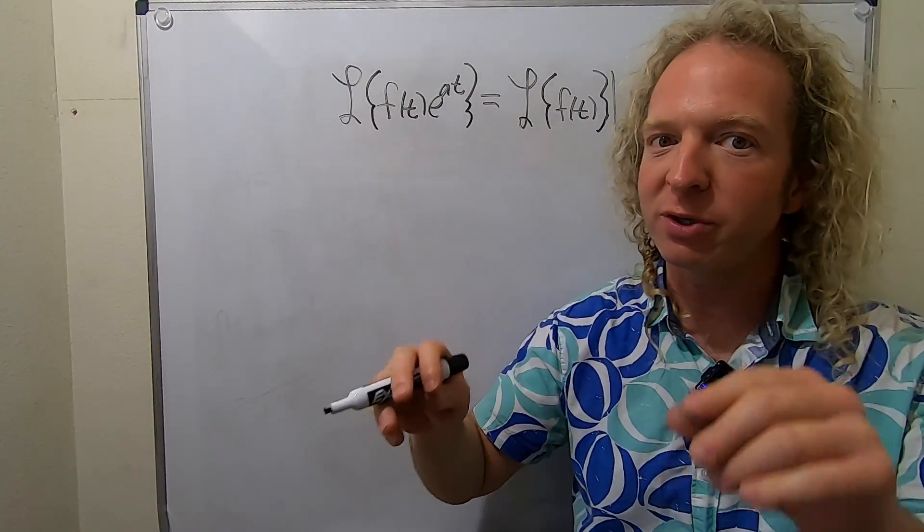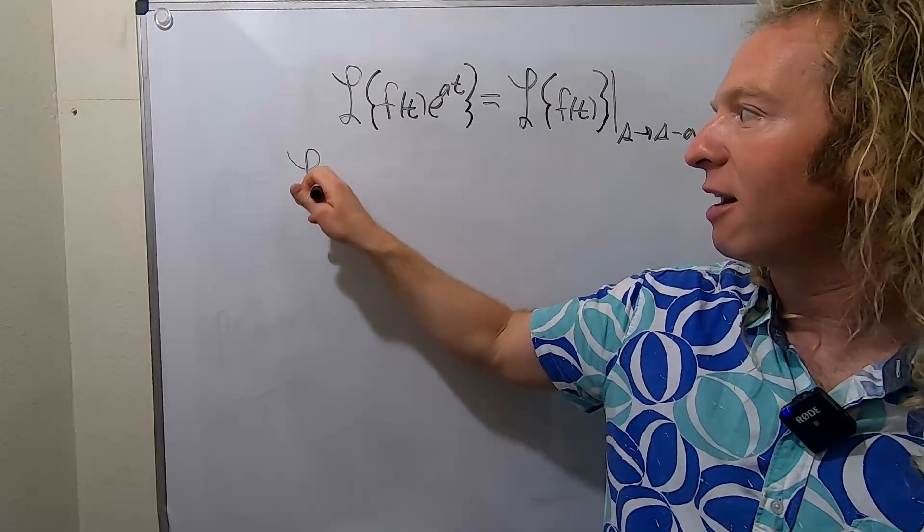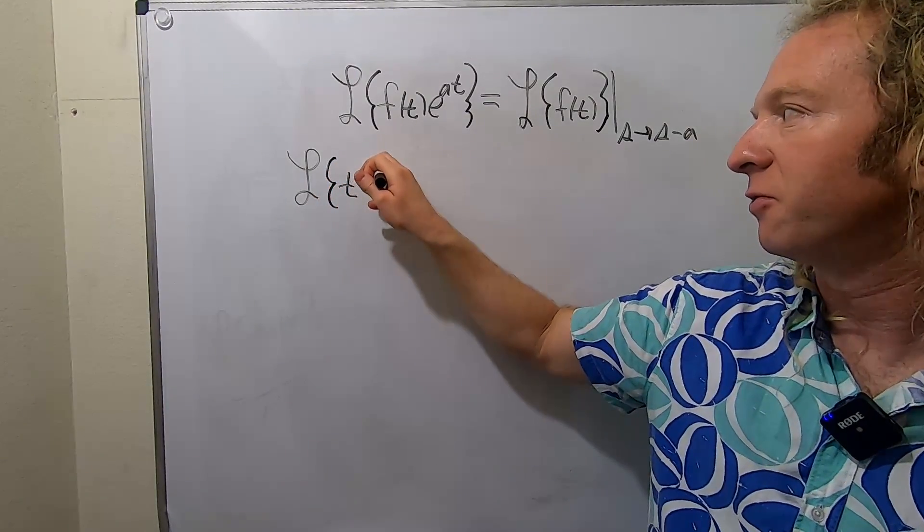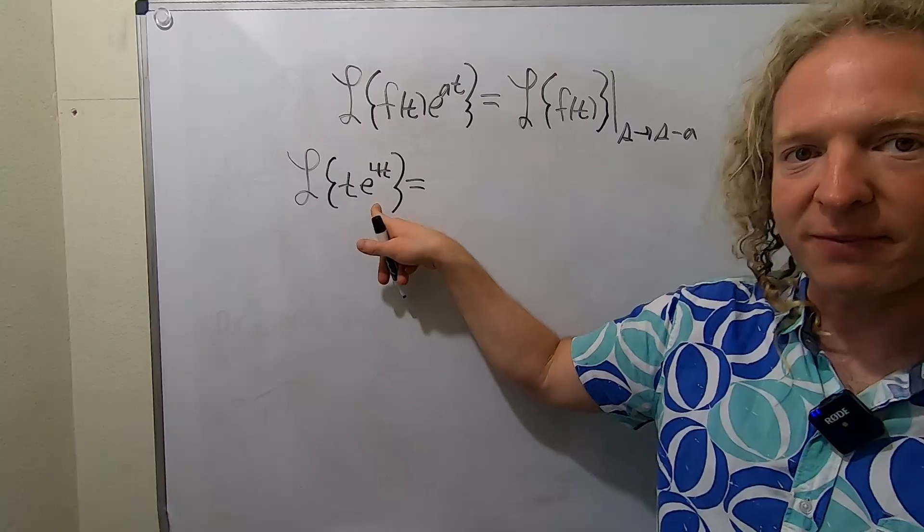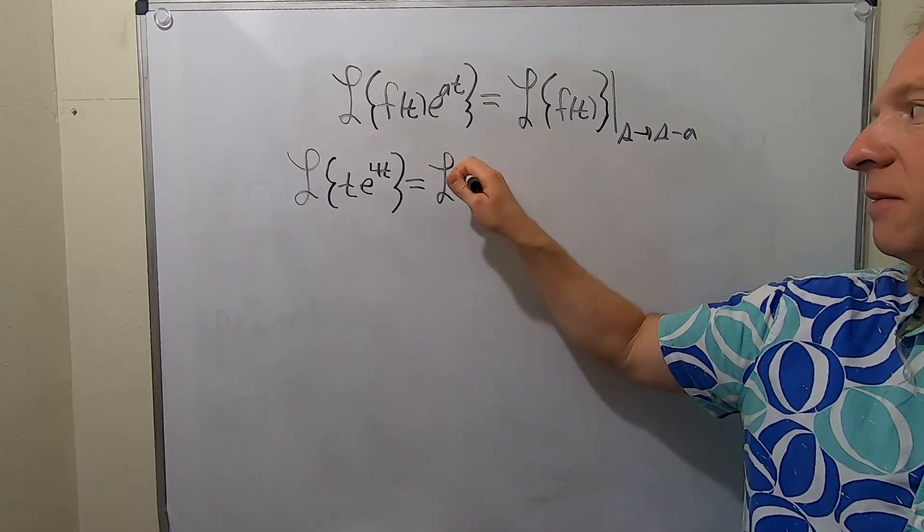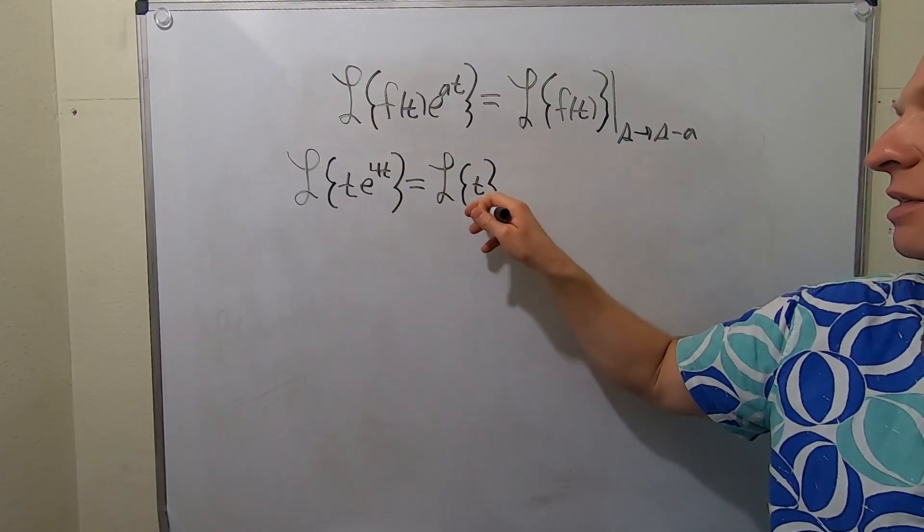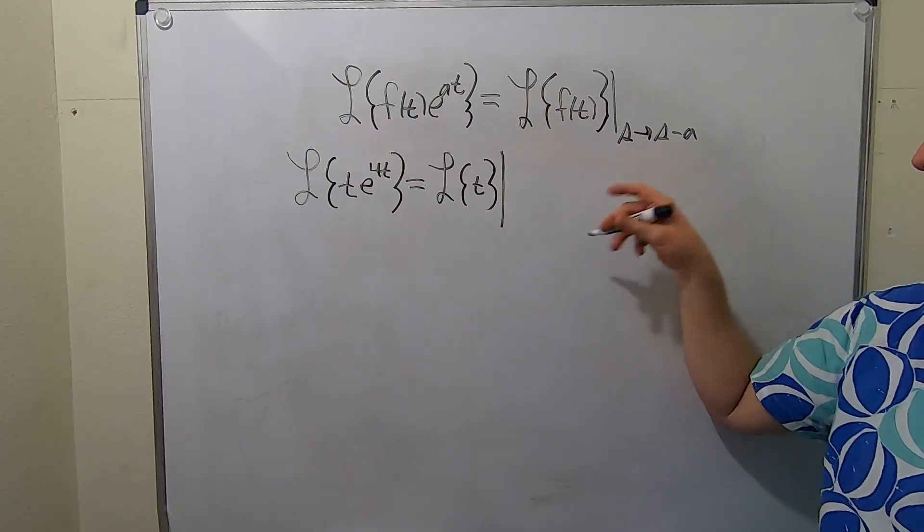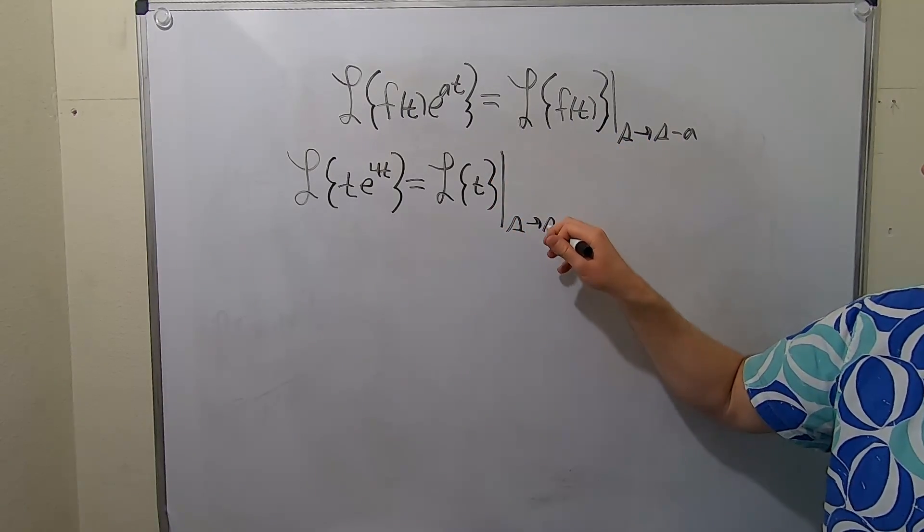So as a quick example before we do inverse ones, let's say we have the Laplace of t times e to the 4t. I'll do it really quickly. So you drop the e, so you get the Laplace of t, and you replace the e with the shift. So the line, and then s to s minus a, so s to s minus 4.